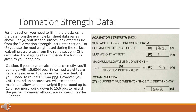Since mud weights are generally recorded to one decimal place (tenths), you'll need to round 15.6844 ppg. However, you can't round up because you will exceed the maximum allowable mud weight if you round up to 15.7. You must round down to 15.6 ppg to record the proper maximum allowable mud weight on the kill sheet.